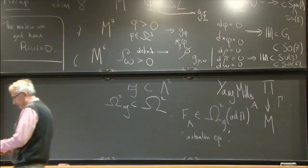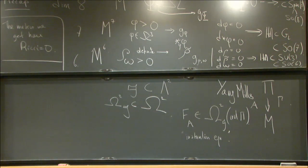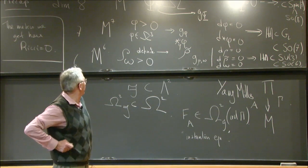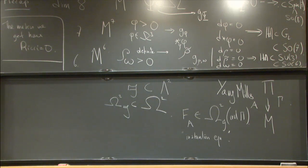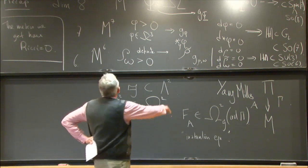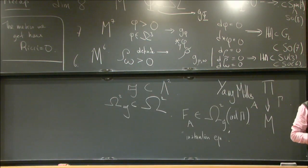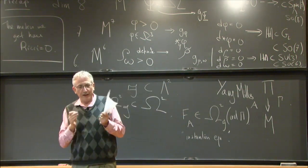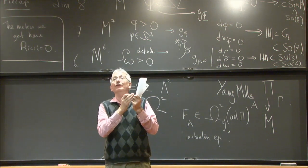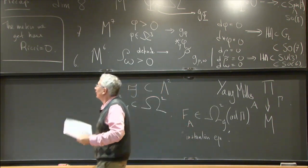Maybe there'll be time to say a few more words about these geometric structures — both the calibrated geometry and the Yang-Mills geometry — in the next lecture. The main point for now is that we're going to talk about the 7-dimensional case, and the main point of this lecture is to say something about the global theory of these structures on a compact 7-manifold. Here I mean global in the sense of global on a compact manifold, but really local with respect to small deformations — local in the space of structures but global over a compact manifold.